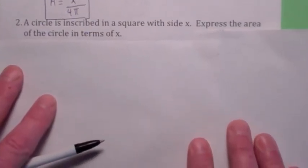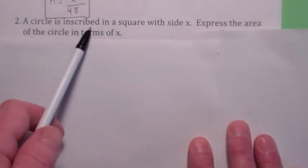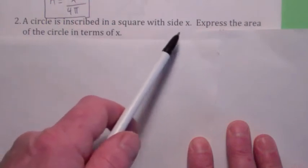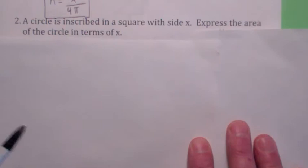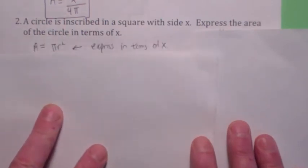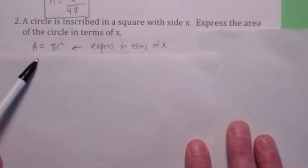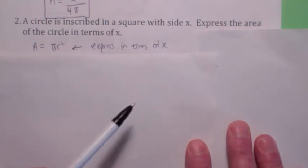Try this one. A circle is inscribed in a square of side x. Inscribed just means it's inside of and it's touching. So a circle is inscribed in a square of side x. Express the area of the circle in terms of x. Okay, so the area of the circle, again, is pi r squared. And you want to express this in terms of x, where x is the side of the square.